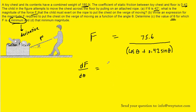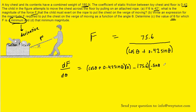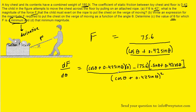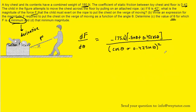The quotient rule tells us to take the bottom function and multiply it by the derivative of the top function. The top function is a constant and the derivative of a constant is zero. Then we subtract the top function times the derivative of the bottom function. The derivative of cos theta is negative sine theta, and the derivative of 0.42 sine theta would be 0.42 cos theta. This is all divided by the bottom function squared. Because zero multiplies the entire first term, that cancels out. To minimize our force function, we set the derivative equal to zero.